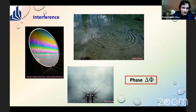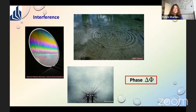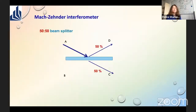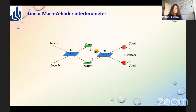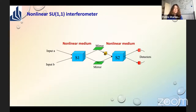Interference is a very well-known tool for measuring phase, and you can observe it everywhere in nature, not just in optics but also in other systems. In quantum optics, our basic element is a 50-50 beam splitter, which transmits and reflects light each with 50% probability. Using beam splitters, we can construct typical linear interferometers — that's the Mach-Zehnder interferometer, which consists of two beam splitters with some phase in between, input ports, output ports, and everything is linear.